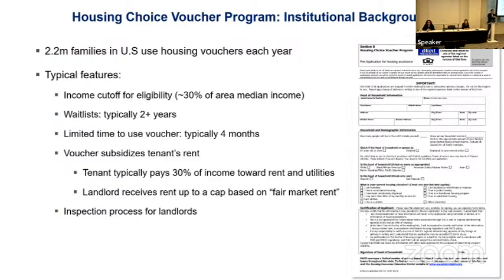Once you get the voucher, you have to find a landlord willing to rent to you — you usually have about four months to do that. The tenant pays generally about 30% of their income and the voucher pays for the rest. What caps the total size of the voucher payment is what the landlord charges for the unit, but there is a cap based on either a fair market rent that is blanket across a metropolitan area, or in some areas like Seattle, fair market rents that vary based on the location of the unit. If you're trying to lease up in a more expensive place, the voucher will generally pay more, but your 30% contribution wouldn't generally change.